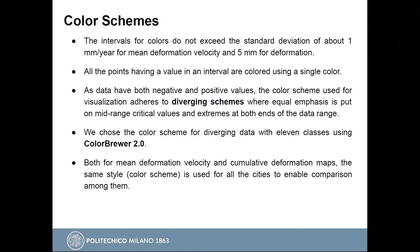We also paid attention to the color schemes. The intervals for colors do not exceed the standard deviation of about one millimeter per year for mean deformation velocity and five millimeters for deformation. All points having a value in an interval are colored using a single color. We used diverging color schemes, in which negative and positive values and the mid-range critical values are given strong emphasis. We chose the color schemes using the ColorBrewer 2.0 tool, a very popular tool in cartography. For both datasets, we use the same color scheme to enable visual comparison between the cities.